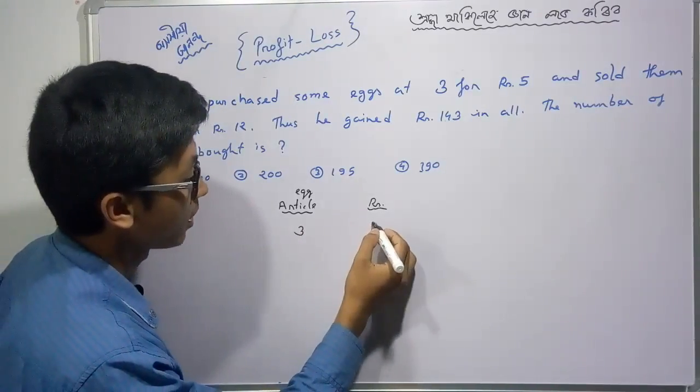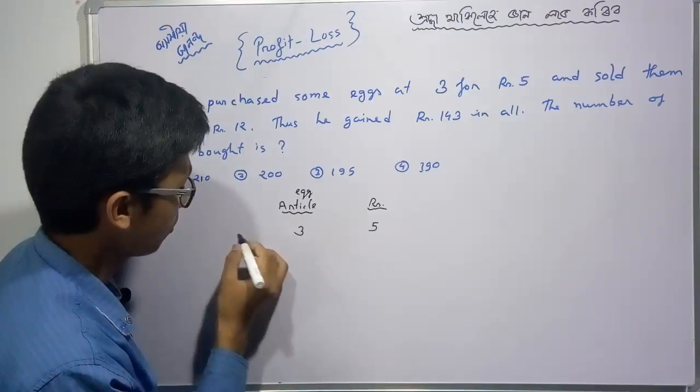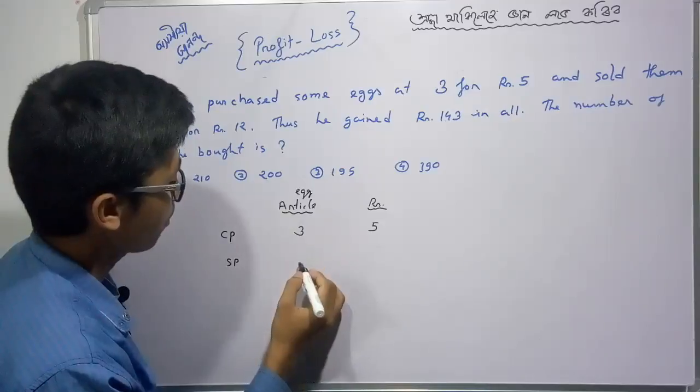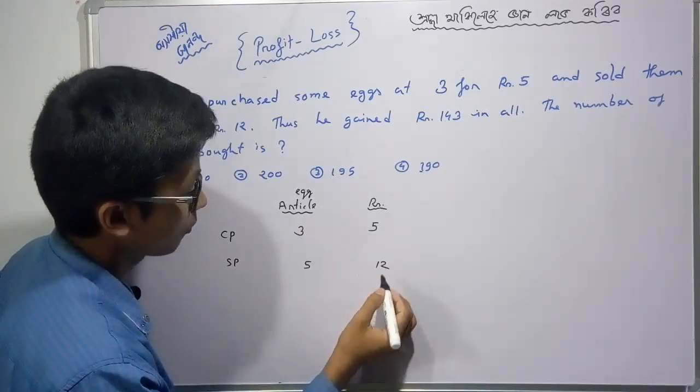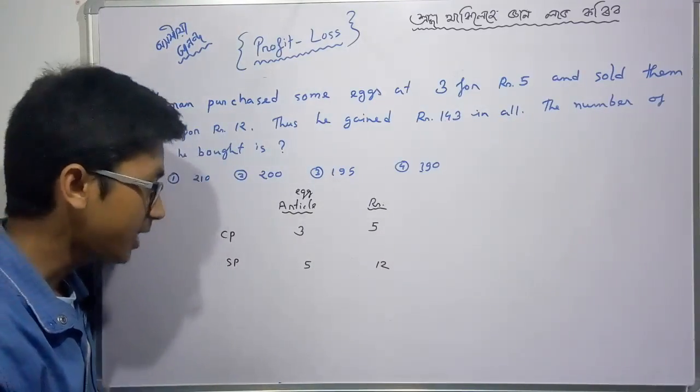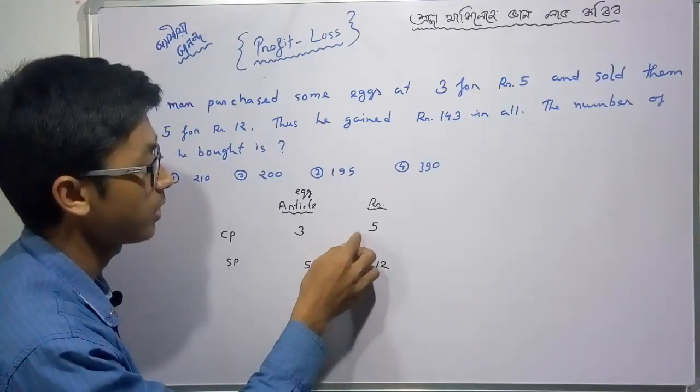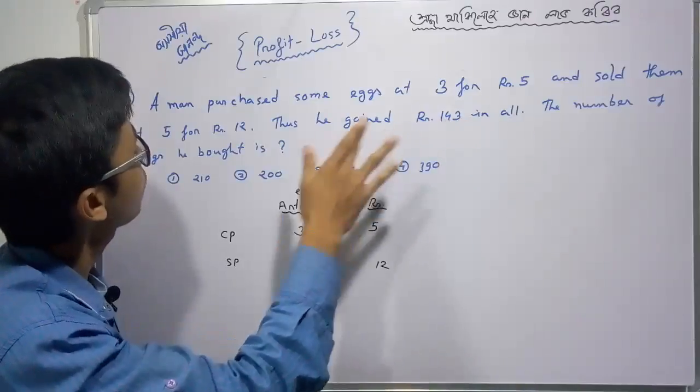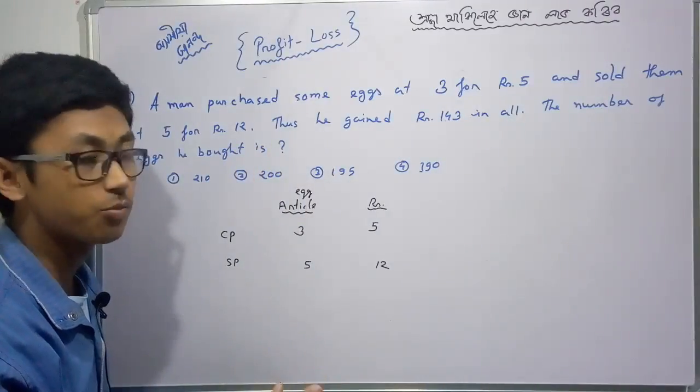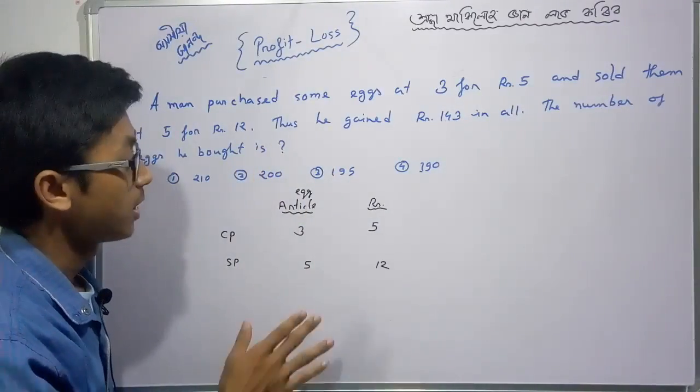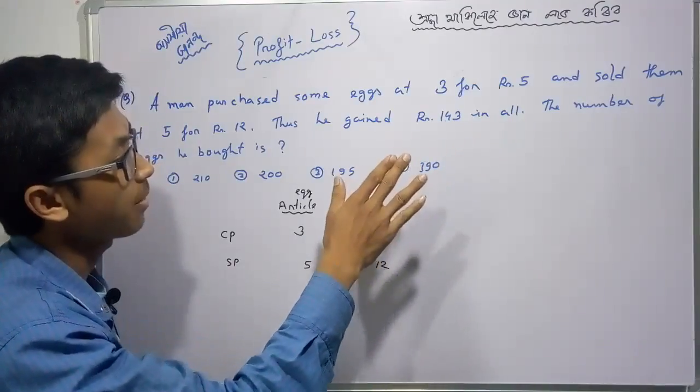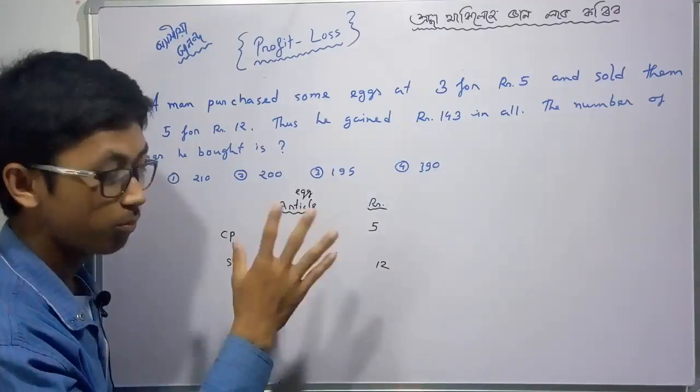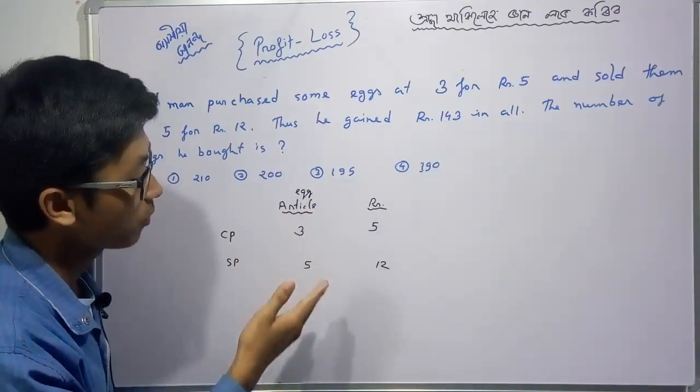3 for 5, so cost price. 5 for rupees 5, that's the selling price. We can use cross multiply method to solve this. With profit percentage, the number of eggs or articles will help us find the answer.